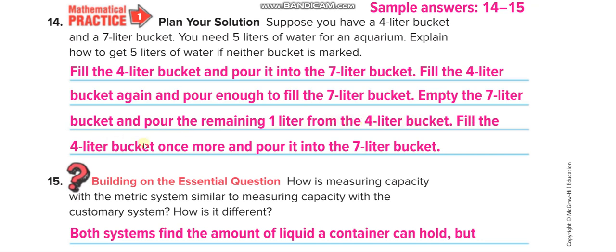Then fill the four-liter bucket one more time and put it in the seven-liter bucket. Now you have five liters of water - five liters of water in the seven-liter bucket.